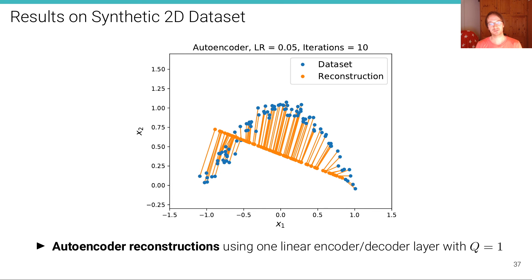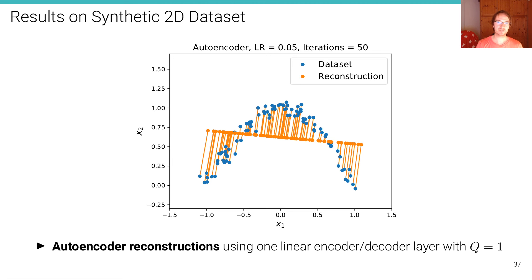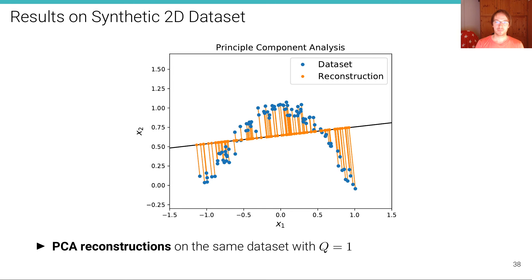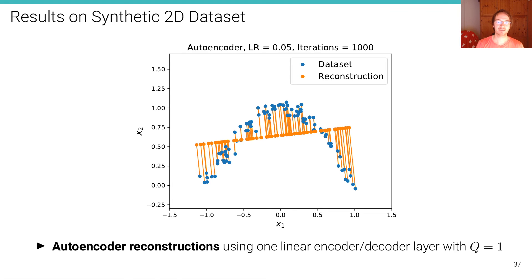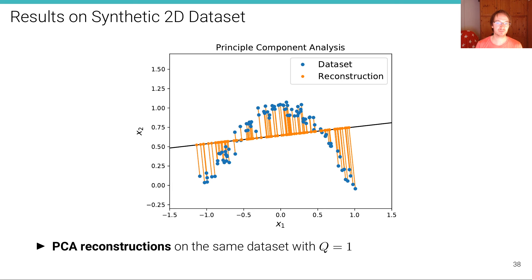But then after 10 iterations already, we can see that the model converges to something that's better. That has a lower reconstruction error than the initialization. This is after 50 iterations. And then this is after 1000 iterations. And if we compare this to the result of principal component analysis with a one dimensional latent space Q, then we see that the results are indistinguishable. So we have an empirical proof now also that PCA and an autoencoder with a linear encoder and decoder layer are equivalent.